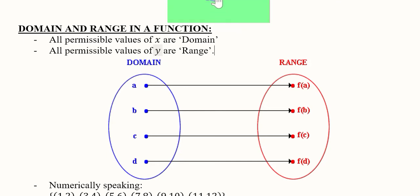In this mapping diagram you can see that domain is depicted on the left hand side and range is depicted on the right hand side. The various values of domain, that is the independent variable, are small a, small b, small c, and small d.